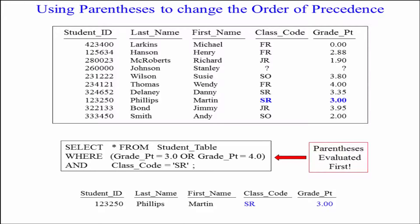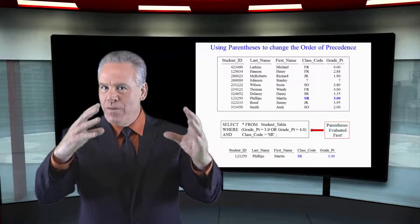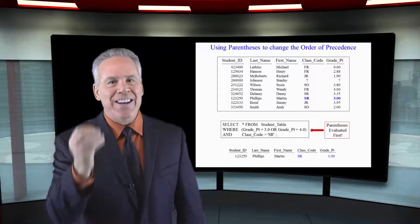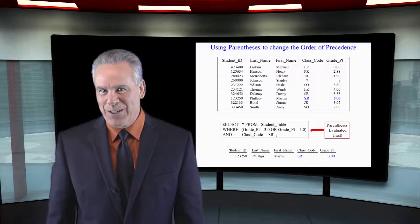that will be analyzed now as do they have a 3.0 or a 4.0 and are they a senior? And now only one row is going to come back.